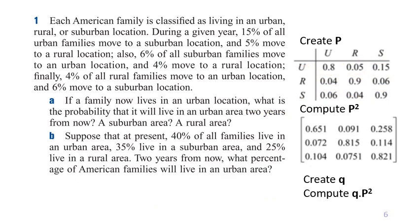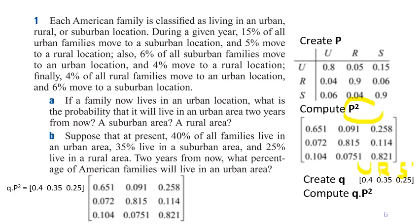For point B, based on the information in the problem, we create vector q as [0.4, 0.35, 0.25], where 40 percent are currently in urban, 35 percent in rural, and 25 percent in suburban. Two years from now, we compute q times P squared. This gives us the resulting distribution two years from now.